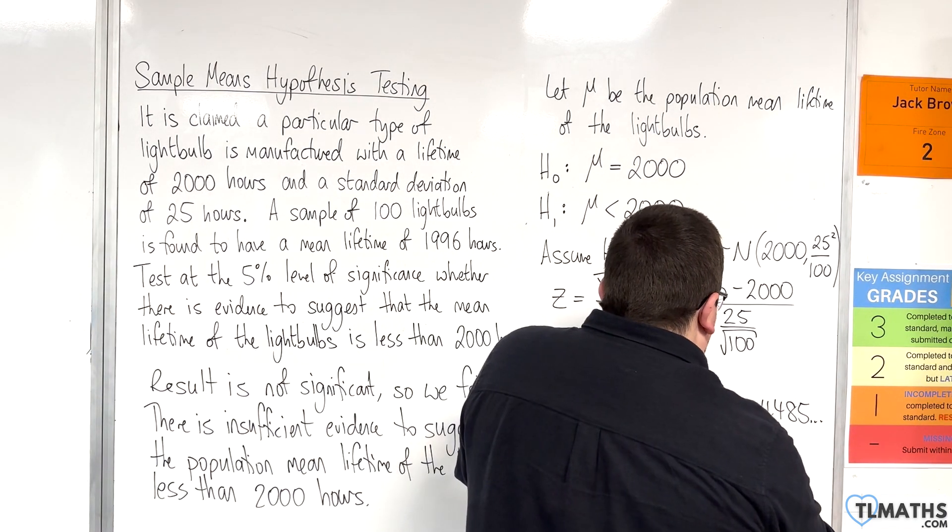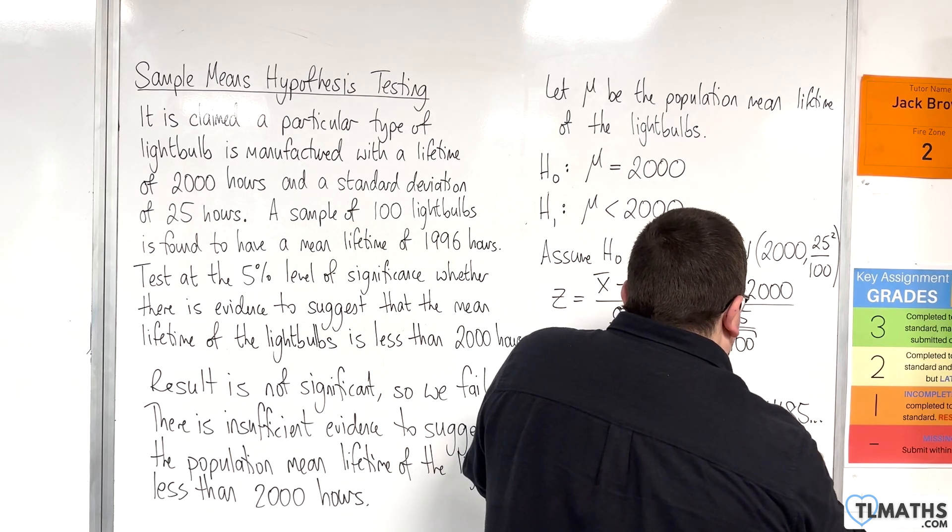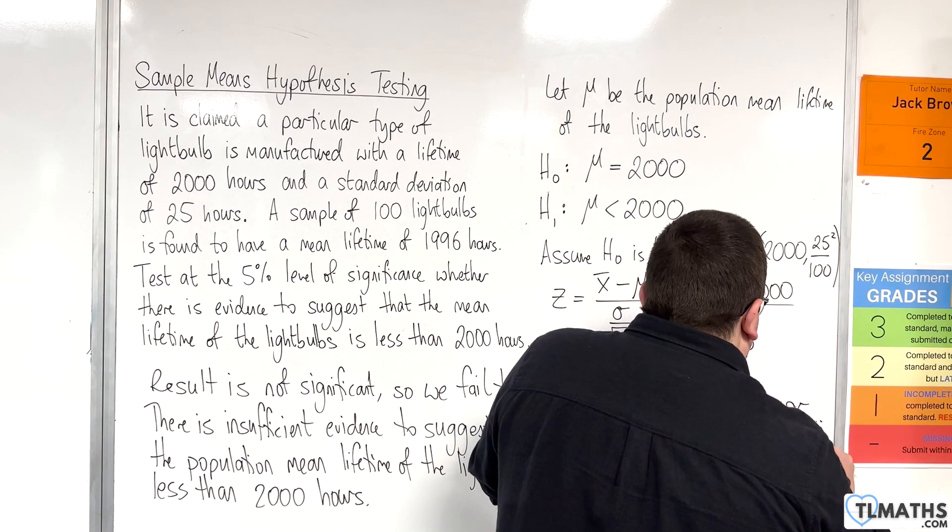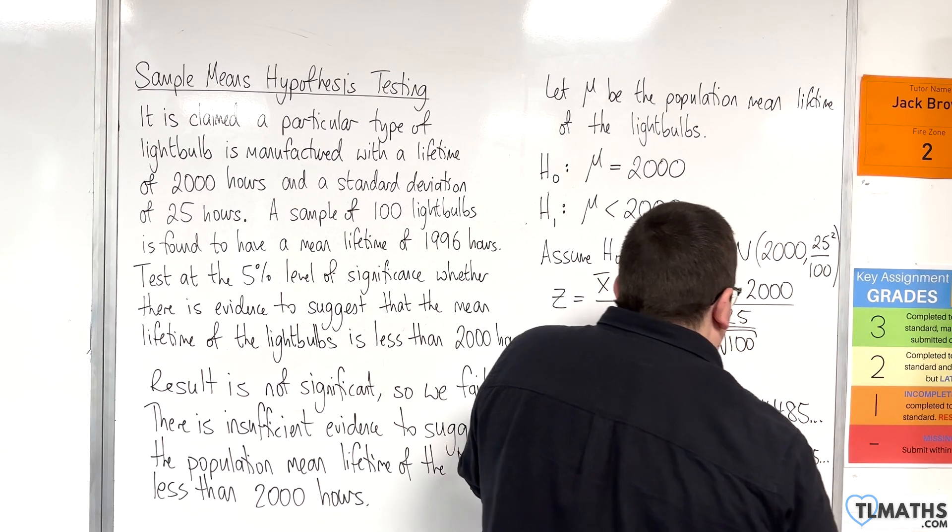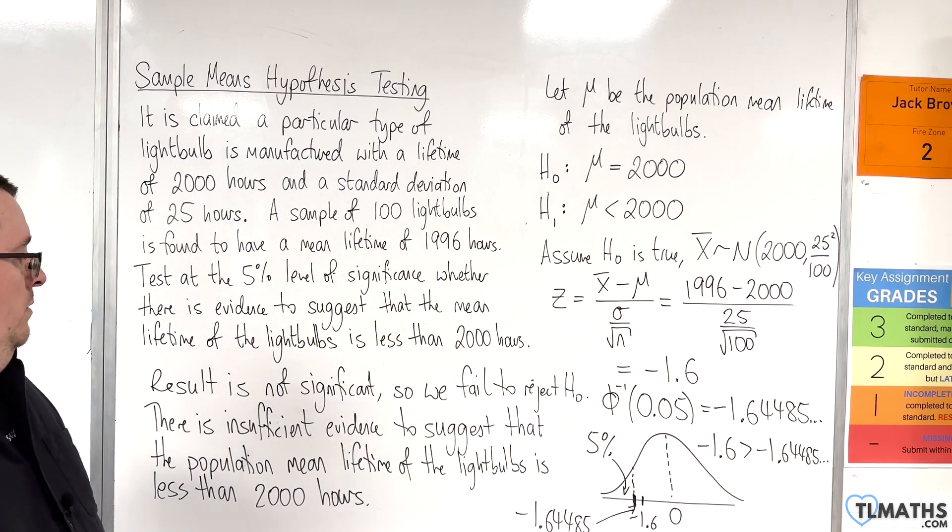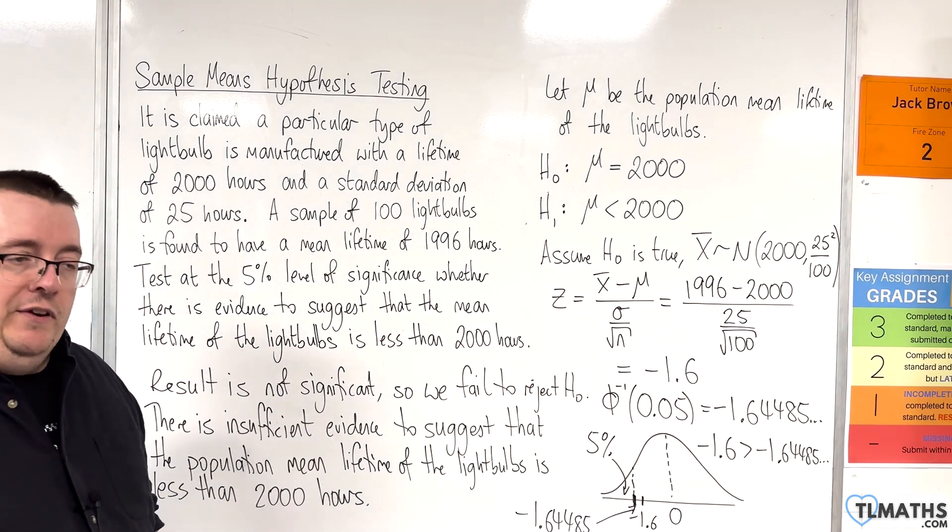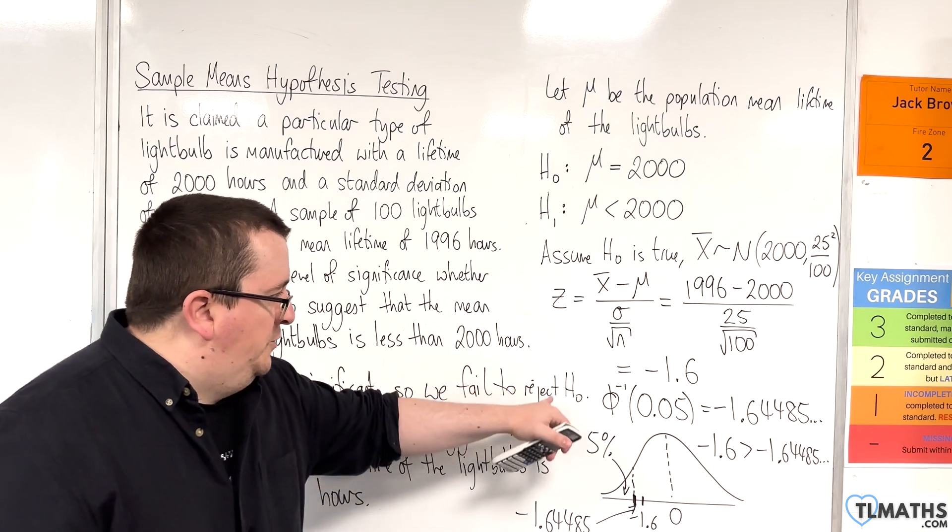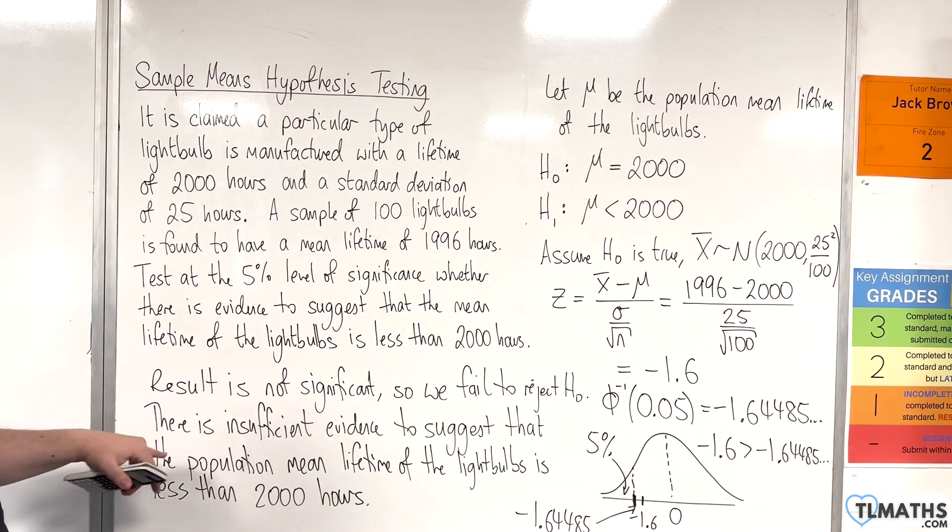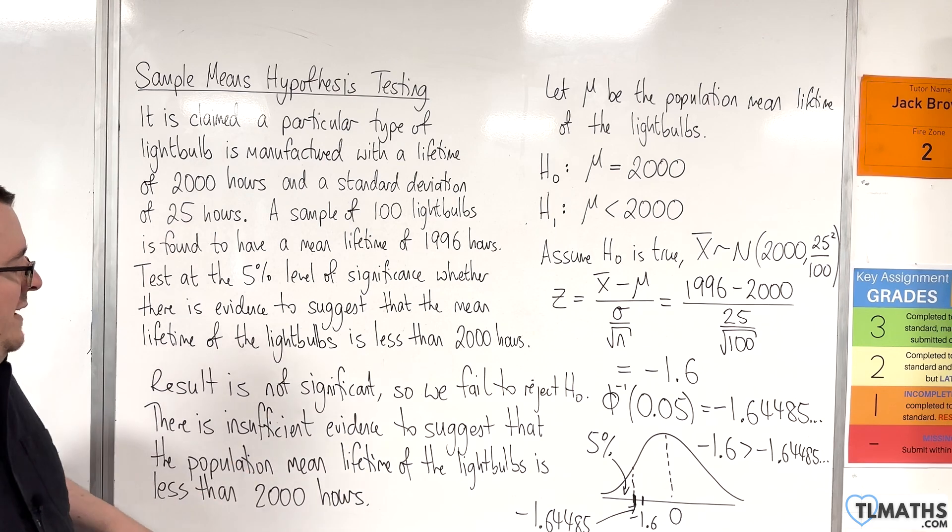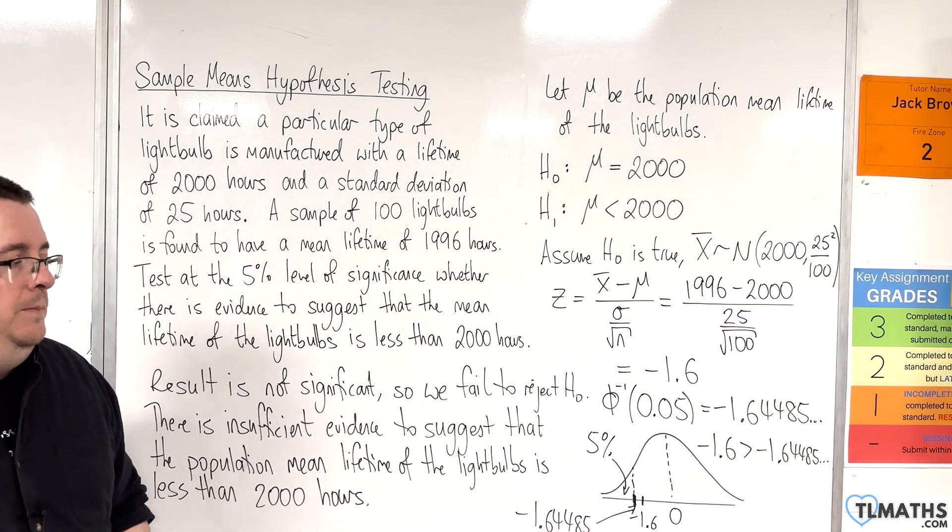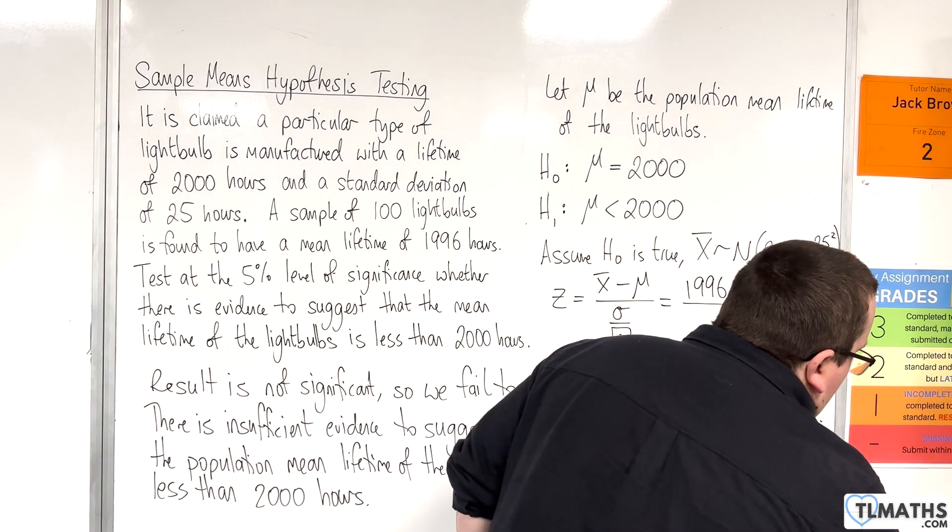So, minus 1.6 is greater than minus 1.64485, etc. And so, the result is not significant. So, we fail to reject H0. There is insufficient evidence to suggest that the population mean lifetime of the light bulbs is less than 2,000 hours. So, that's how you get to your conclusion that way.